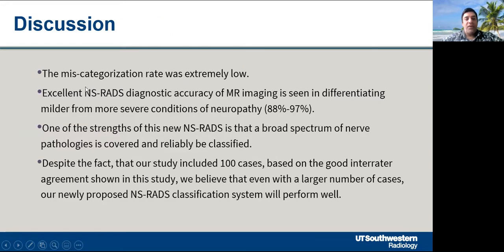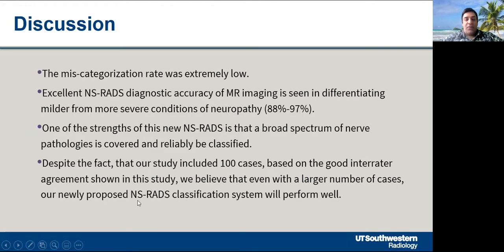The miscategorization rate was very low, and there was excellent NSRADS diagnostic accuracy in differentiating milder from more severe conditions of neuropathy. One strength of this study is that a broad spectrum of nerve pathologies is covered and can be reliably classified. Despite using 100 cases, we found good inter-reader agreement and believe the NSRADS classification will perform well with larger datasets.